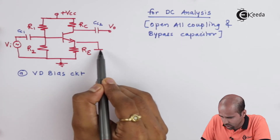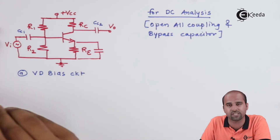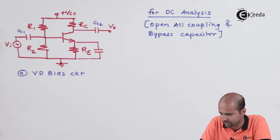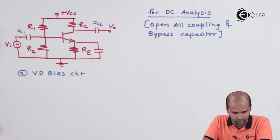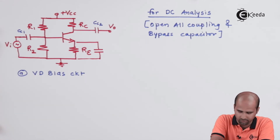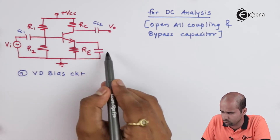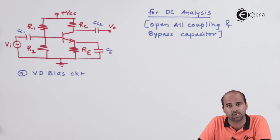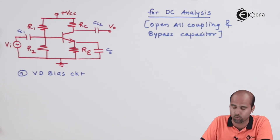This is called a bypass capacitor — we will cover the bypass capacitor in a dedicated video. Here, CC1, CC2, and CE are all bypass and coupling capacitors, and all of them are open-circuited for DC analysis.